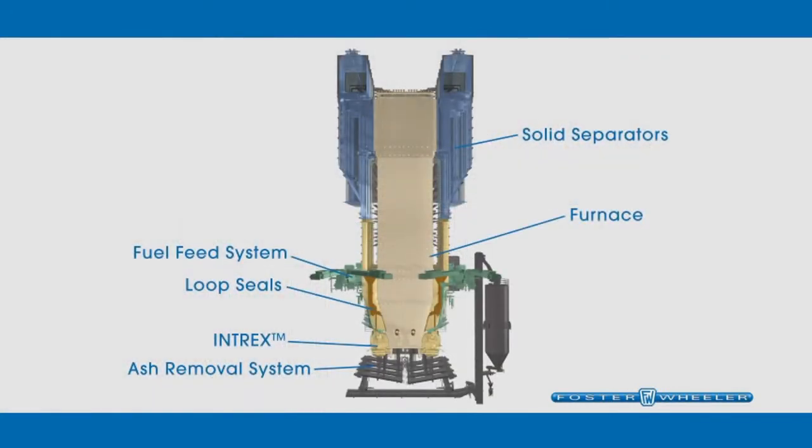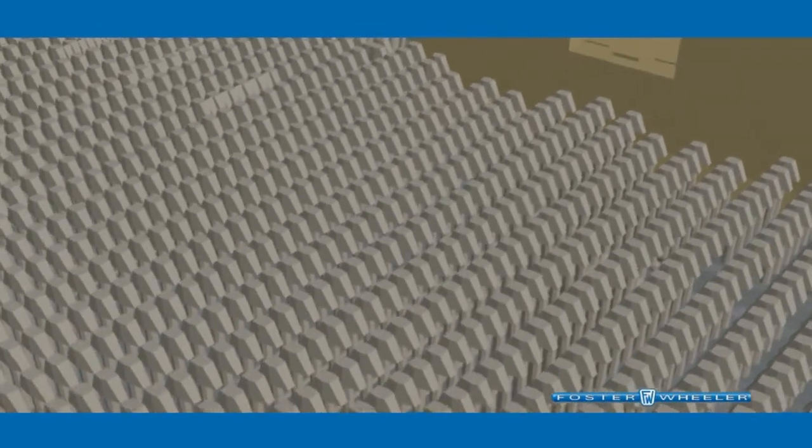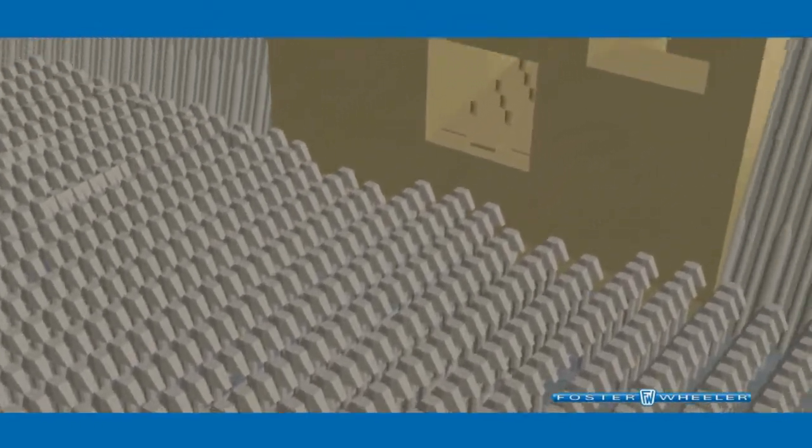As the fuel particles enter the CFB furnace, they are lifted or fluidized by primary combustion air, flowing through hundreds of specially designed nozzles in the floor of the furnace.